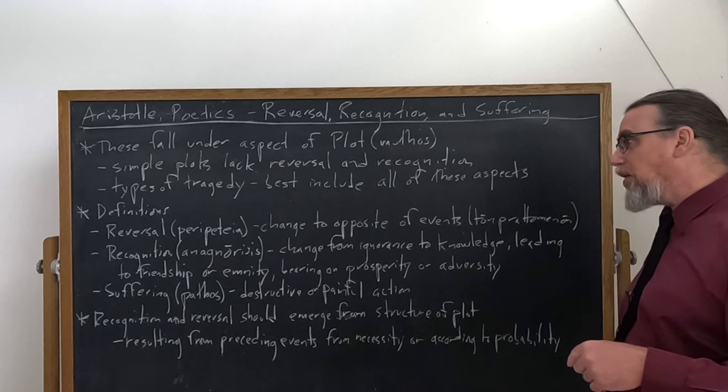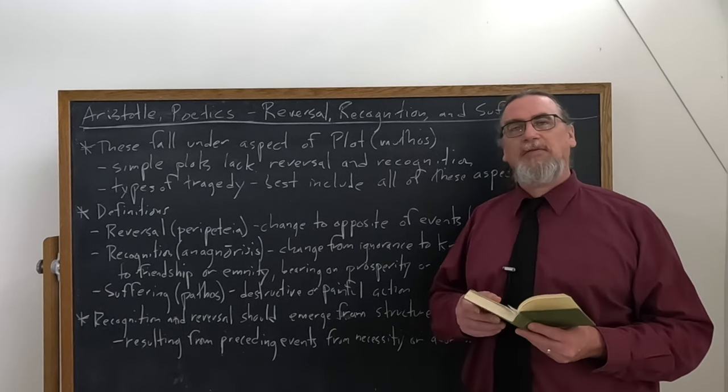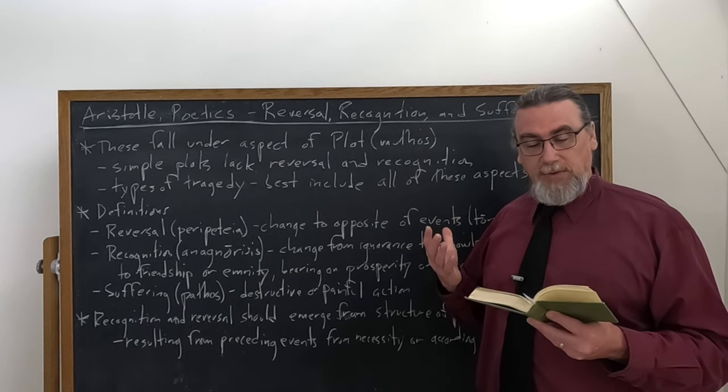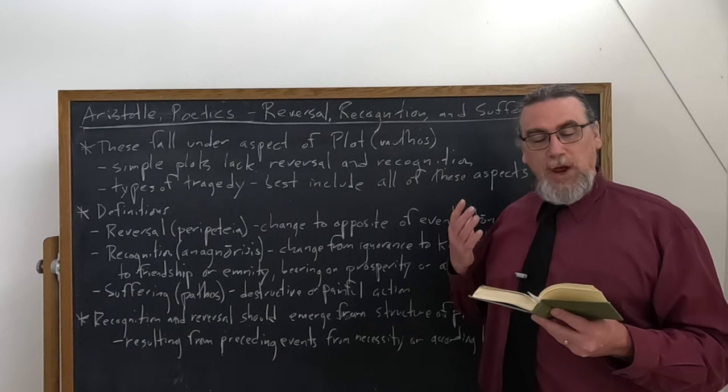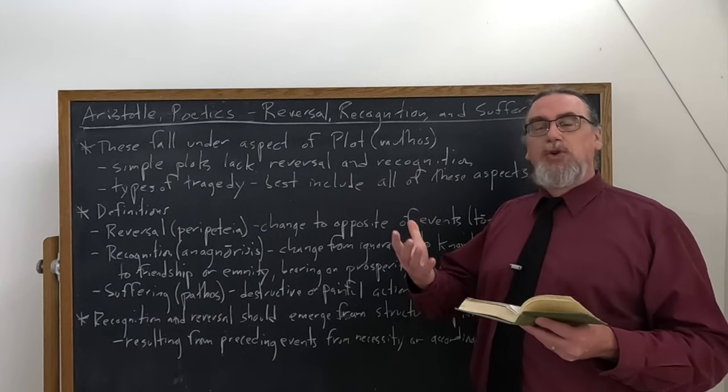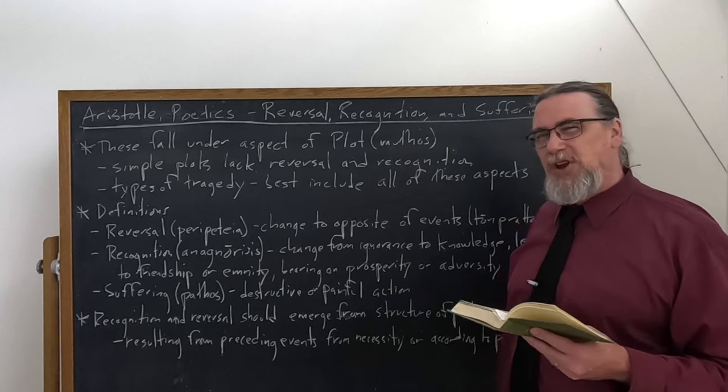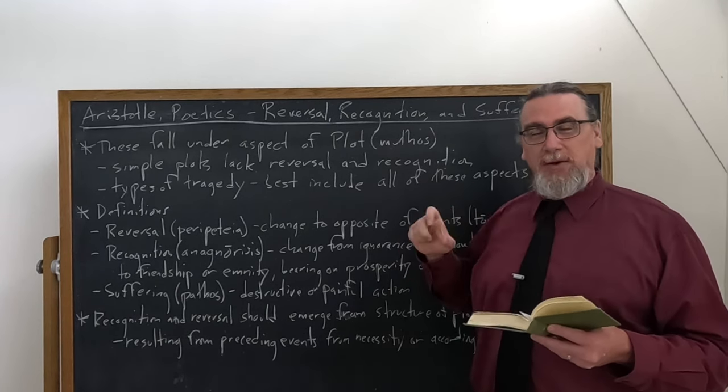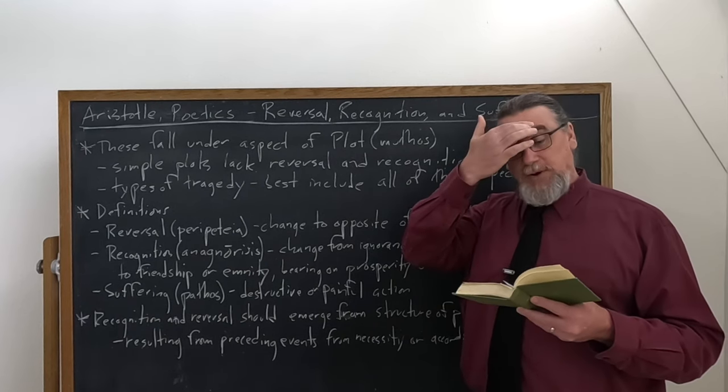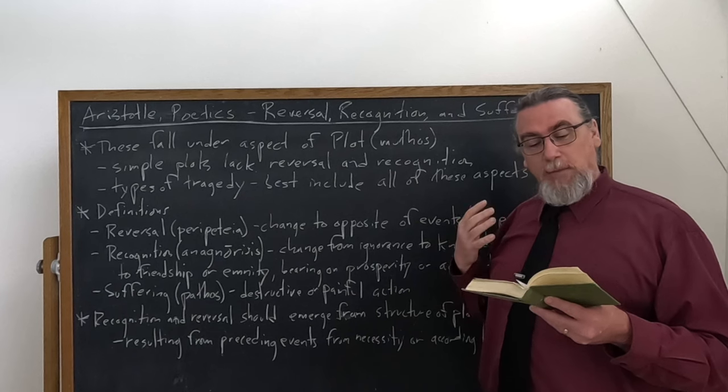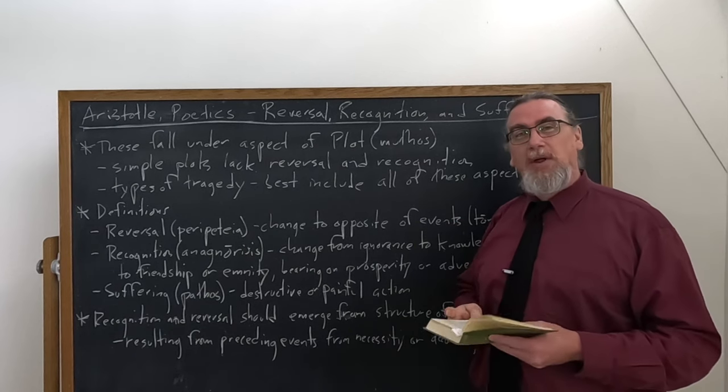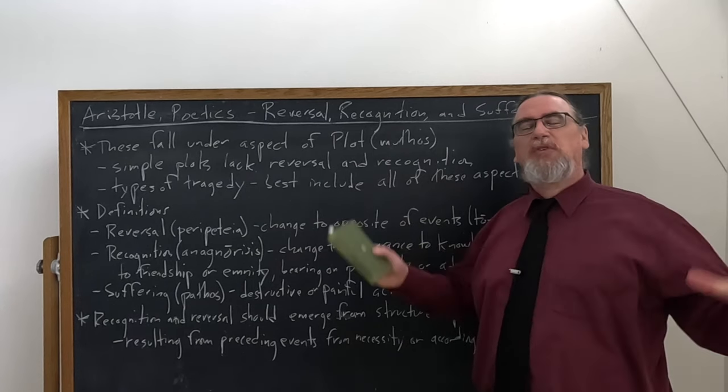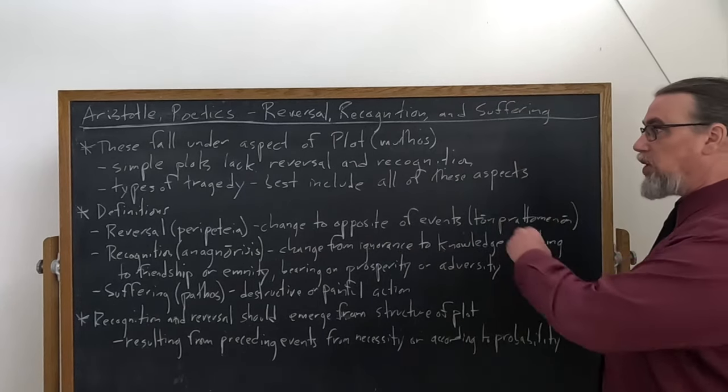And then there's a third part, bearing on things that have to do with prosperity or adversity. So that is ton pros eutuchion. So eutuchion, things going well for you, but there's an element of chance there. E dustuchion, dus is the opposite of eu in Greek, meaning bad. So bad fortune, bad luck. And he actually uses the term horismenon there. So it's not just in relation to, but defined by or restricted to. So that's what recognition is.